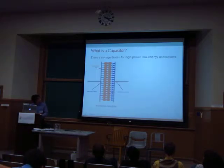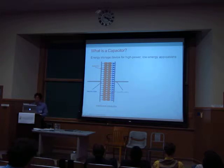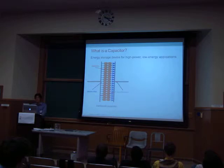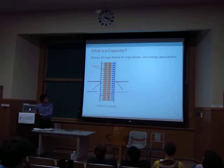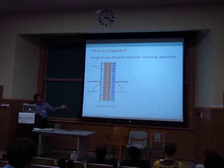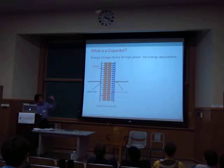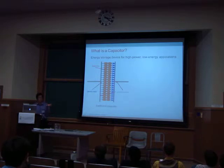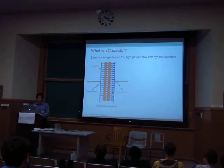Now some background. First off, what is a capacitor? A capacitor is an energy storage device, usually used for high power, low energy applications. In a traditional parallel plate capacitor, you have two parallel plates which encompass a dielectric material in between. When an electric field is applied across the parallel plates, the molecules inside the dielectric actually shift in their places to resist that charge. And when the field is released, the molecules reshift back to their equilibrium position — that's what generates the energy. This is analogous to stretching a rubber band and then releasing it to get energy out.